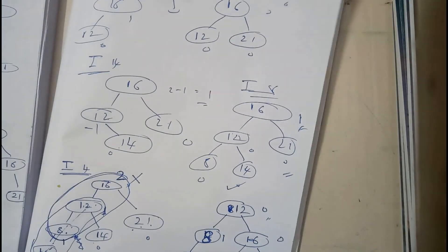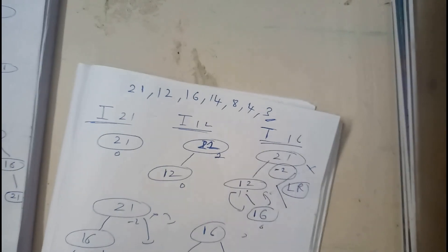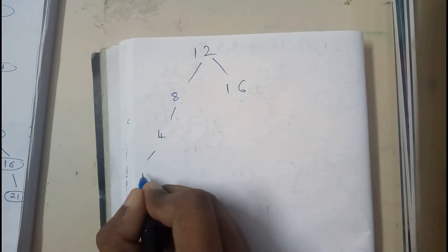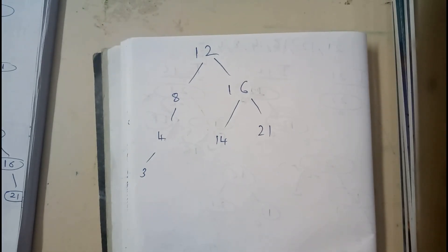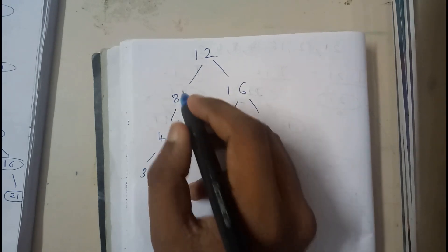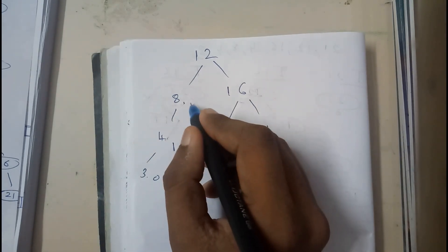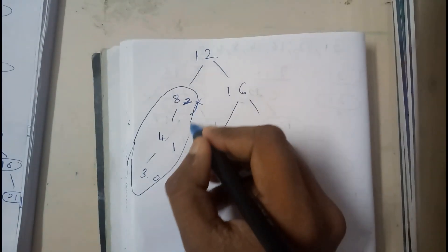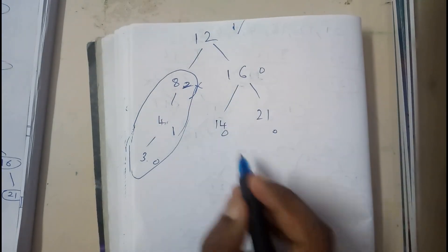There is one more element: 3. We need to insert 3. Looking at the current tree — observing the balance factors: zero, zero, zero, then one, then two — this is going to be a problem. We need to address the problem element, so we shuffle the subtree: three minus two is one, so it's now set.